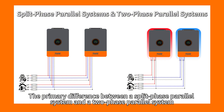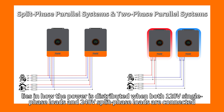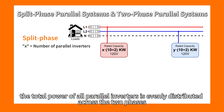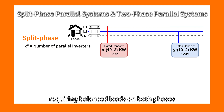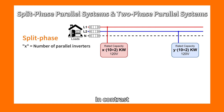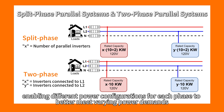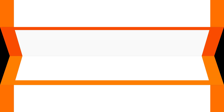The primary difference between a split-phase parallel system and a two-phase parallel system lies in how power is distributed when both 120V single-phase loads and 240V split-phase loads are connected. In a split-phase parallel system, the total power of all parallel inverters is evenly distributed across two phases, requiring balanced loads on both phases. In contrast, a two-phase parallel system allows flexible adjustment of the number of inverters connected to each phase, enabling different power configurations to better meet varying power demands.